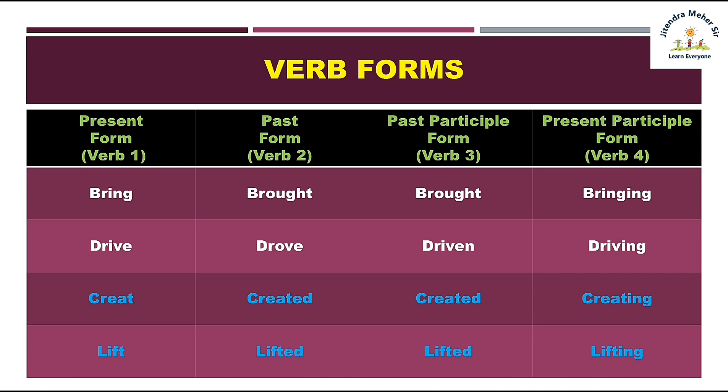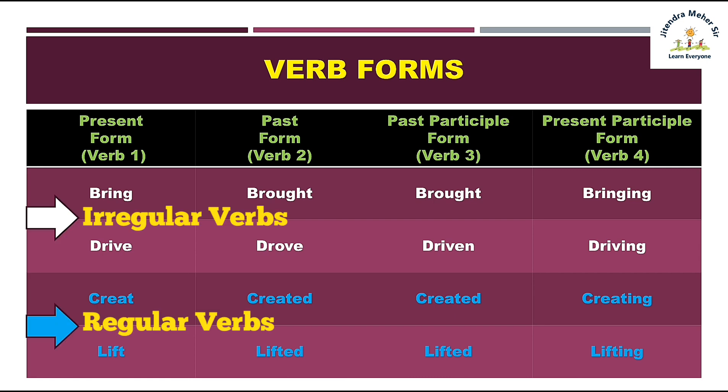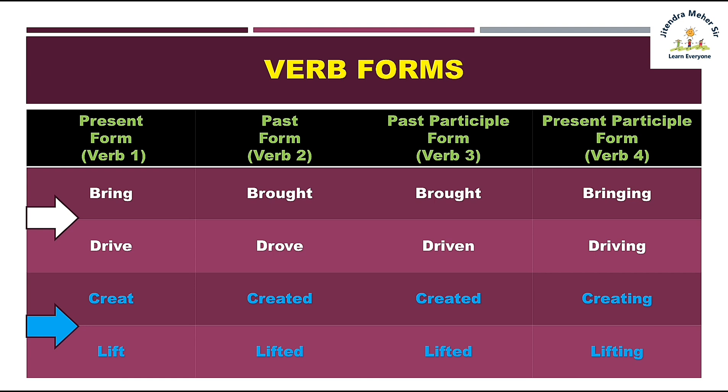Where the verb's second and third forms are the same, those are called regular forms, and where they are not the same, those are called irregular forms. For regular verbs we can easily form them, but for irregular verbs I will give you a link to all the irregular verbs in the description below so you can memorize them.